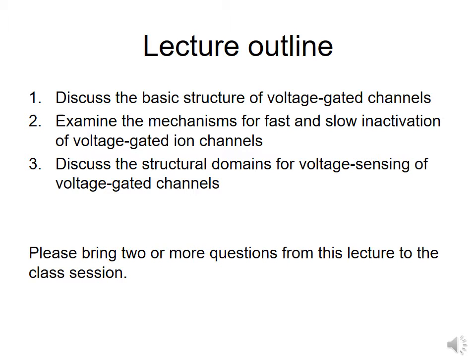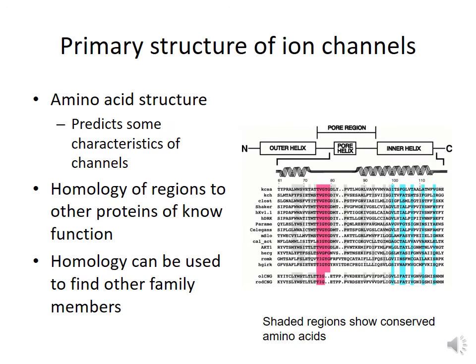Please bring two or more questions from this lecture to the class session. Let's start with the primary structure of ion channels. This term refers to the amino acid sequence that each ion channel has. For example, in this figure you can see several potassium channels that have been aligned in terms of amino acid sequence similarity.